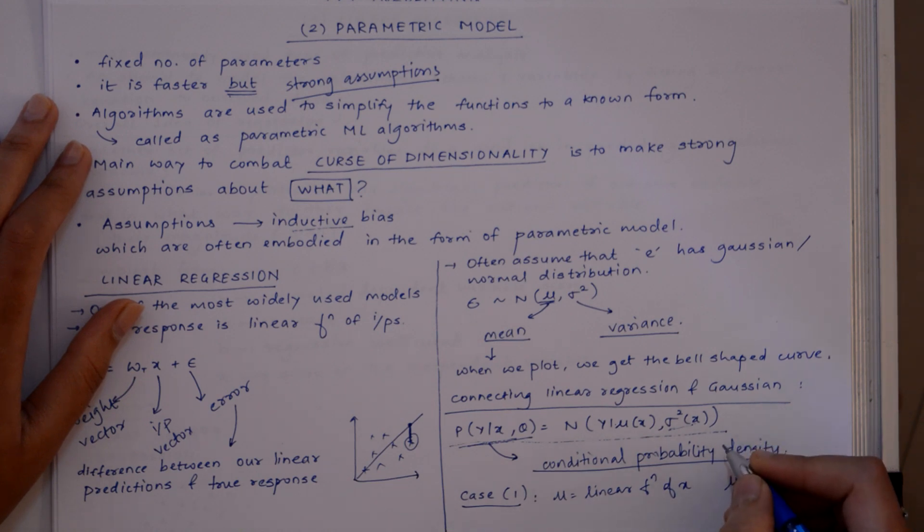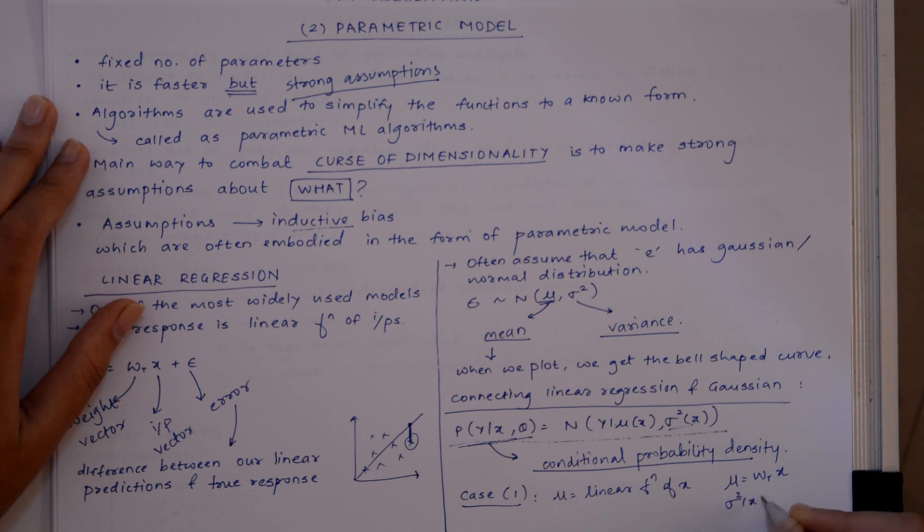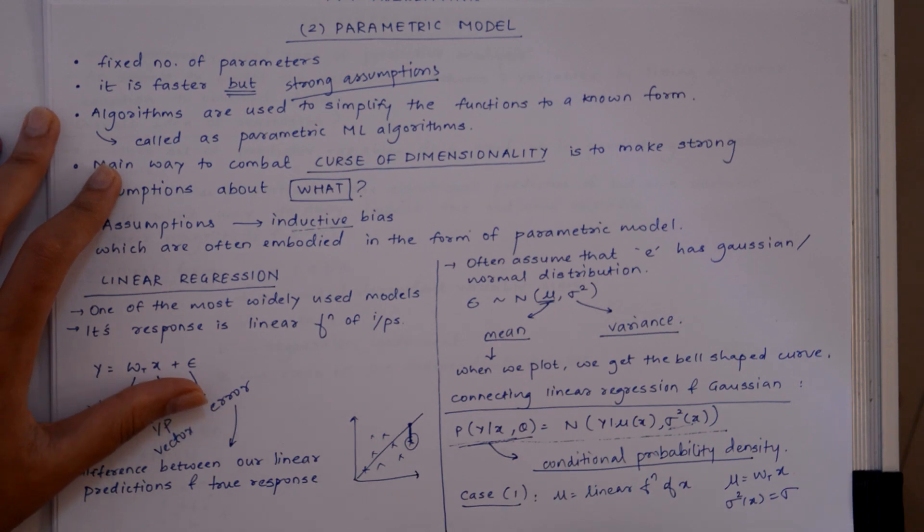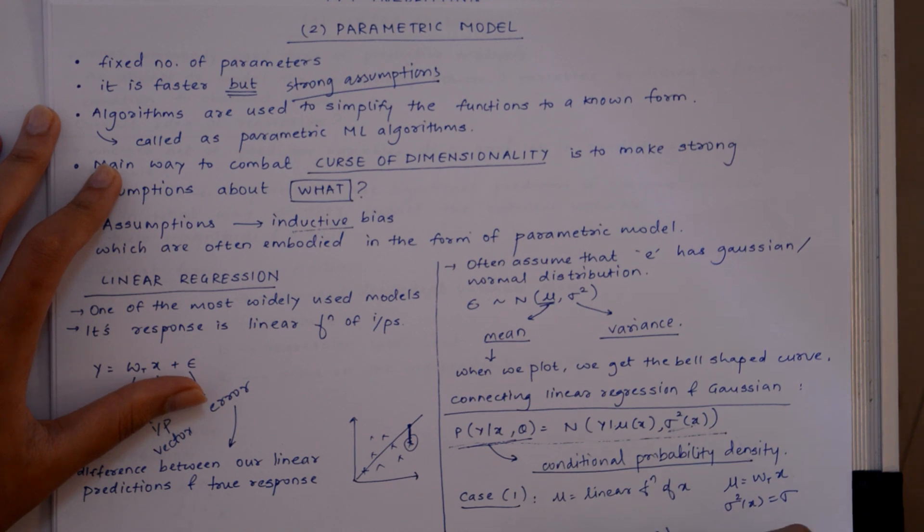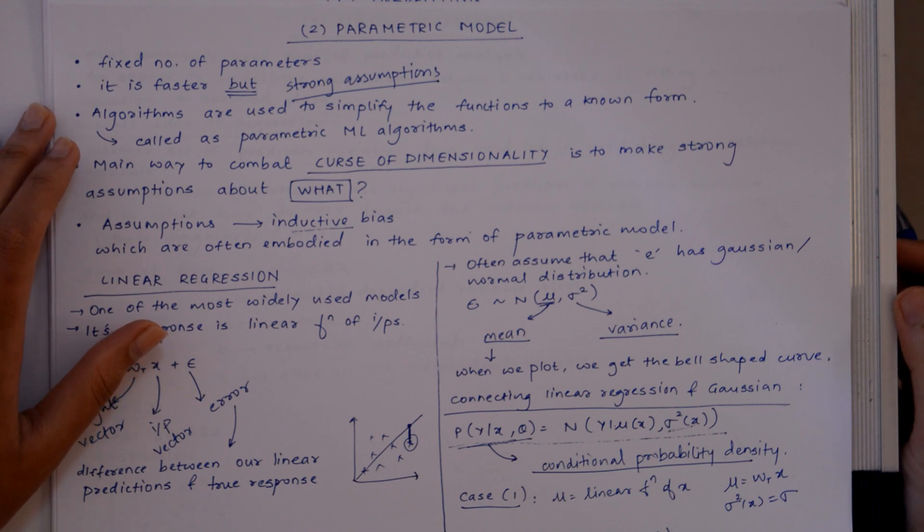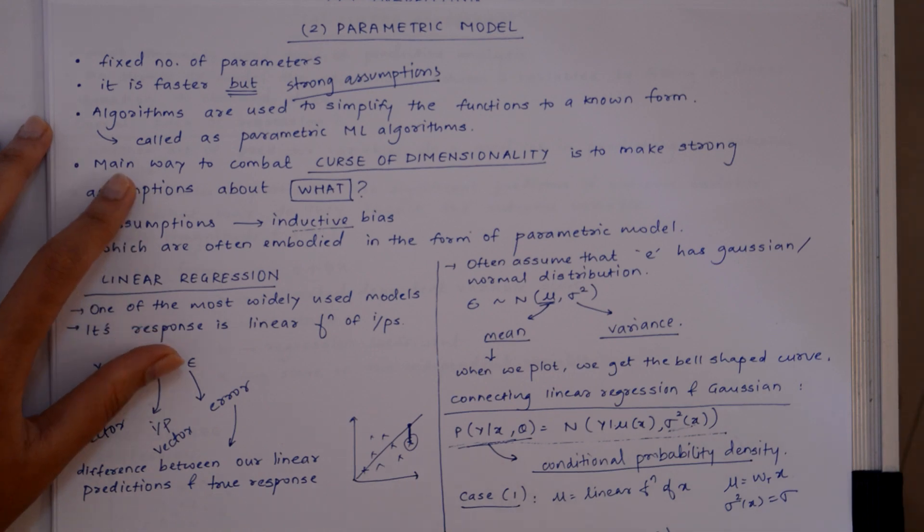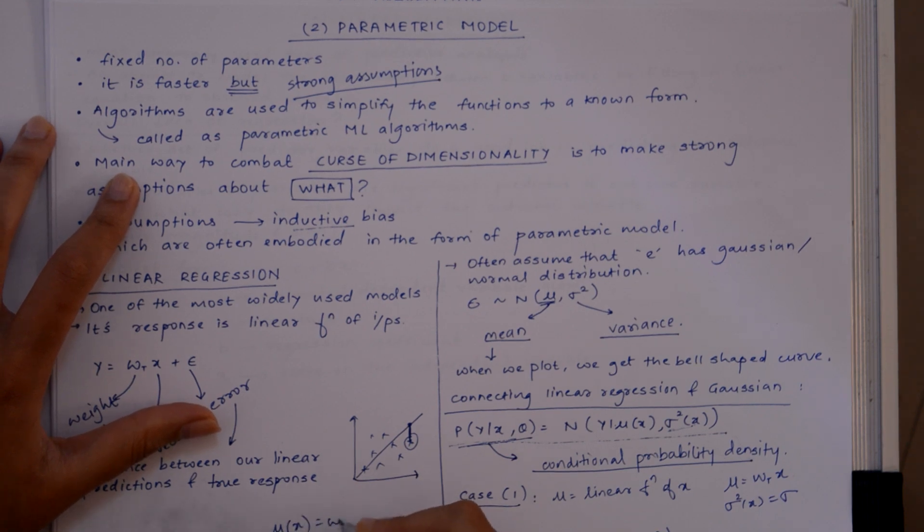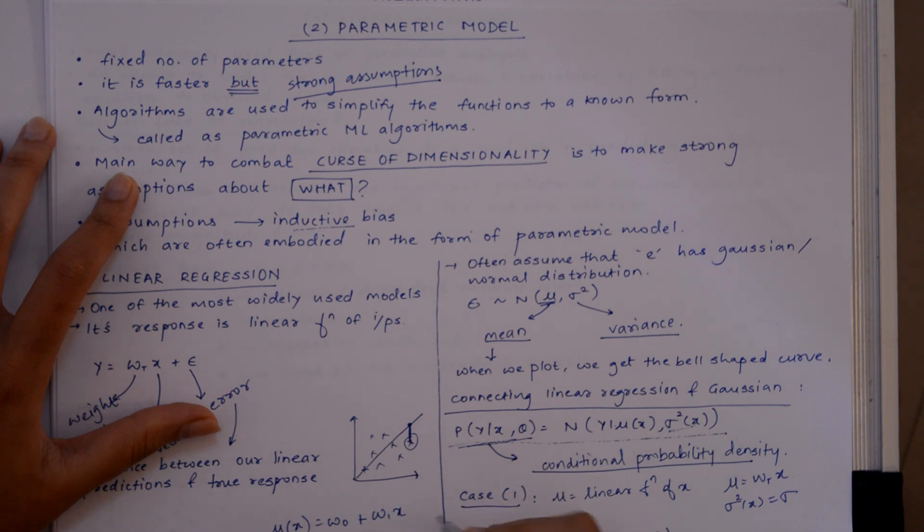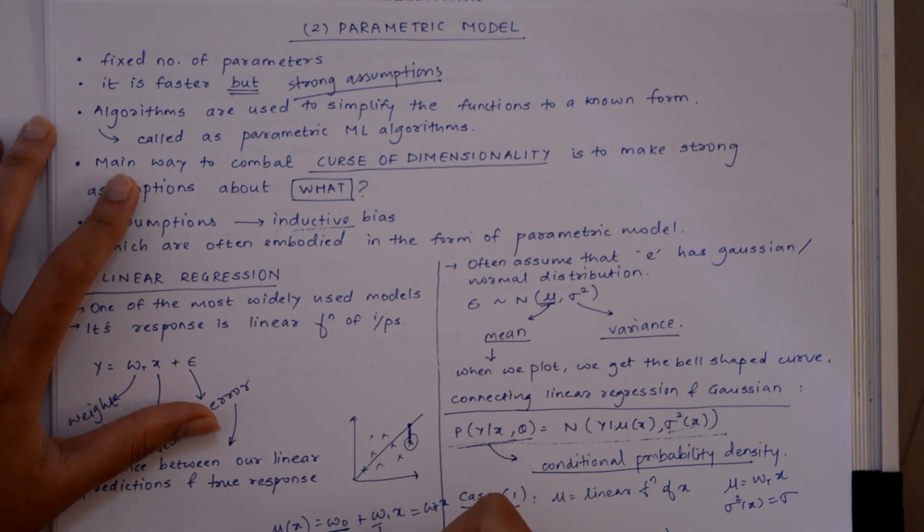So this becomes, in this case, our probability density can be written with parameters for the model. Suppose we have a 1D input and the equation can be written as, wherein w_0 is called bias and this is the slope.